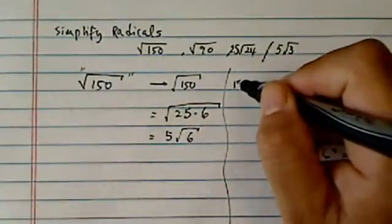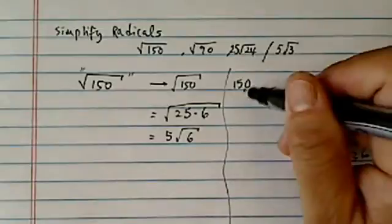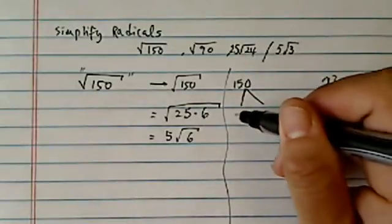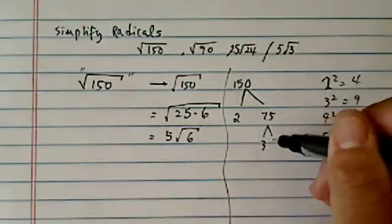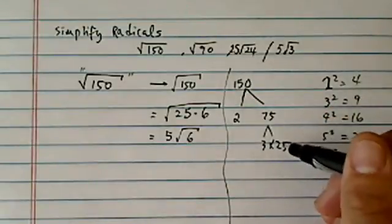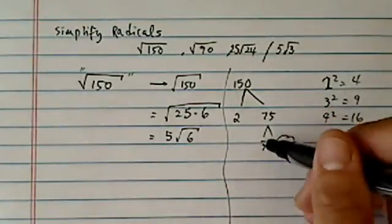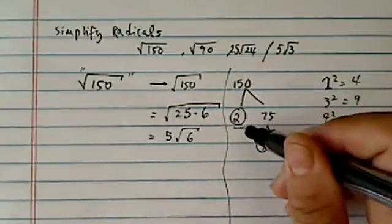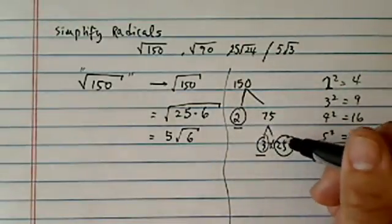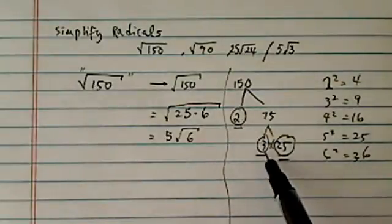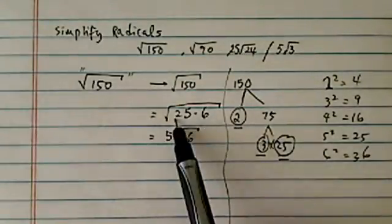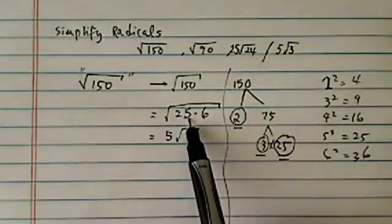I'm going to do it on the side here. A lot of students when they come in say, well, I have this tree structure: 2 times 75, and then 3 times 25. That's fine. If you see this tree, and the minute you get a prime number or a perfect square, then stop. So basically, 2 times 3 is 6, and 25—I didn't bother to do anything else with it because that's my gold nugget.